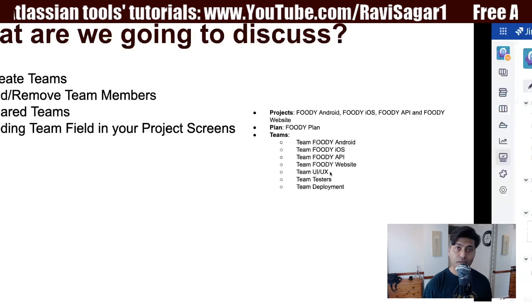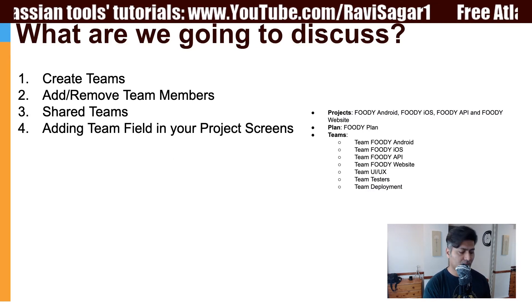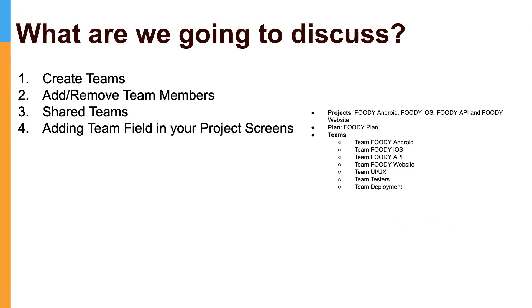Any changes made in Jira are also reflected in Portfolio, and vice versa — for example, changing the team assignment on a story in Portfolio updates the Jira issue accordingly. We will explore team management further in future videos. In the next video, we'll talk about release management — how to create versions and assign them to different stories on the Portfolio plan.